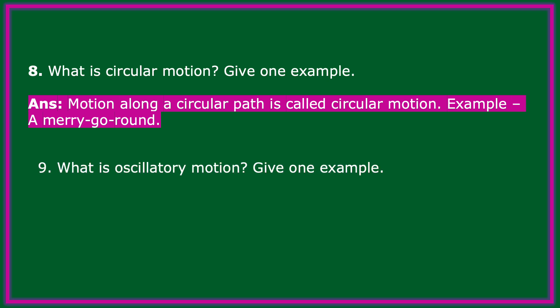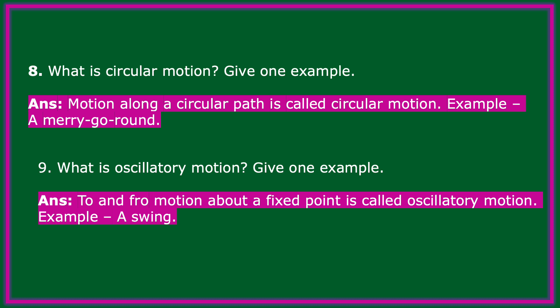What is oscillatory motion? Give an example. To and fro motion about a fixed point is called oscillatory motion. Examples include a swing moving back and forth and the pendulum of a clock.